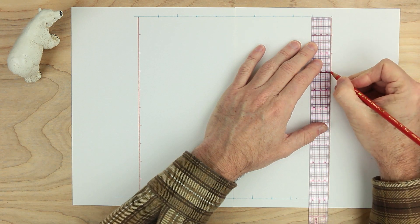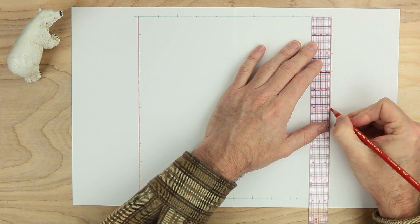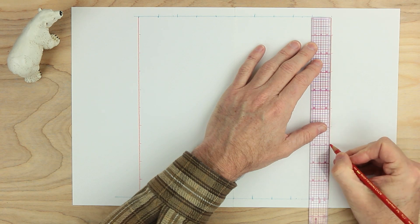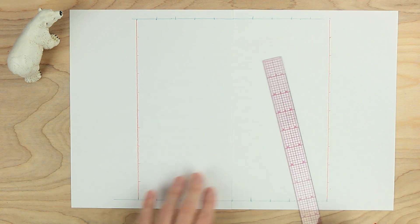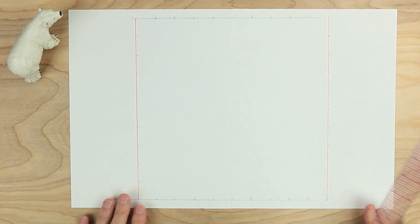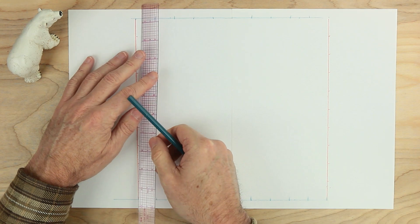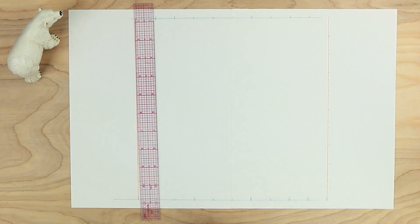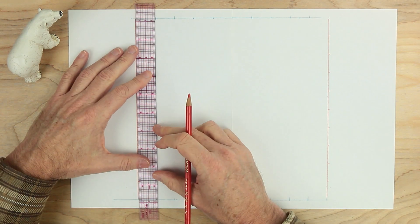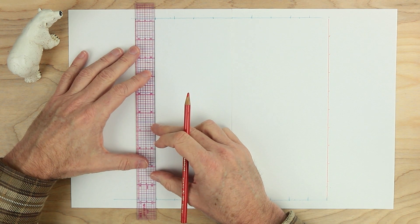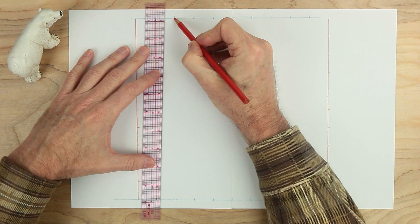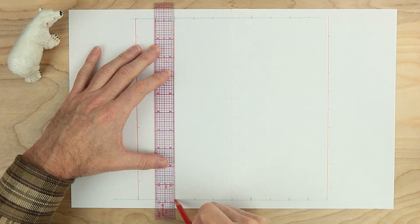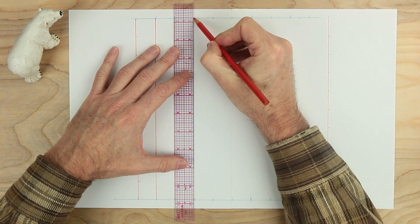Let's go ahead and do the same on the other side. Very last mark, tops and bottoms. Go ahead and draw that line all the way from top to bottom and make the marks. One, two, three, four, five, six, seven, eight, nine. Looking good so far.